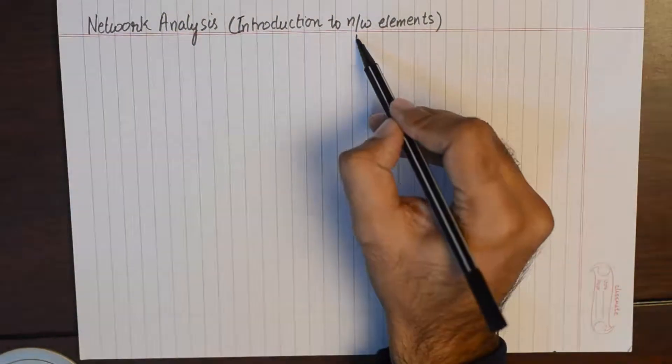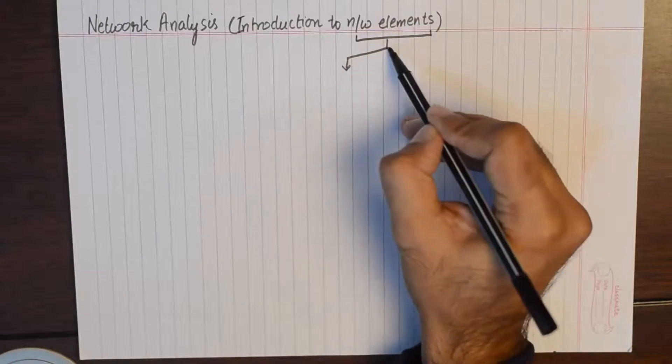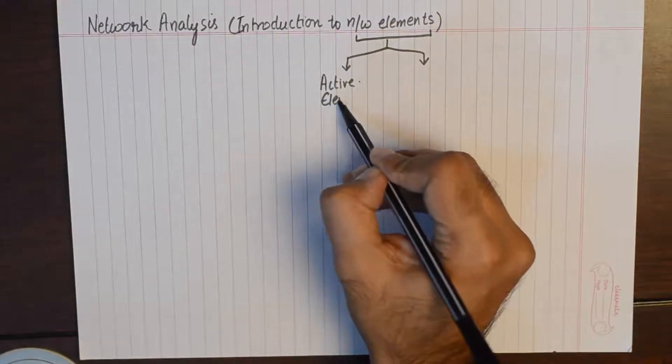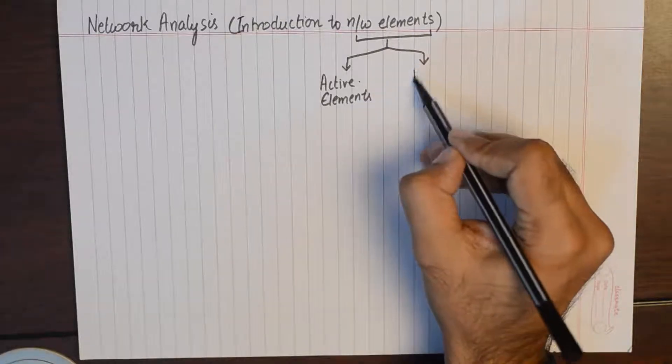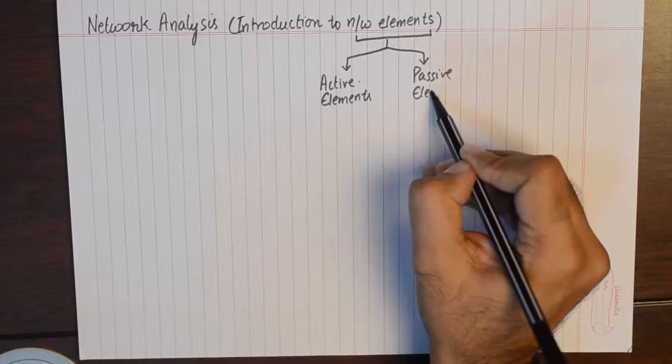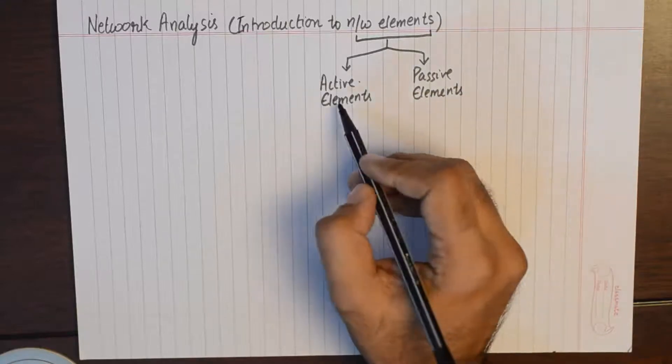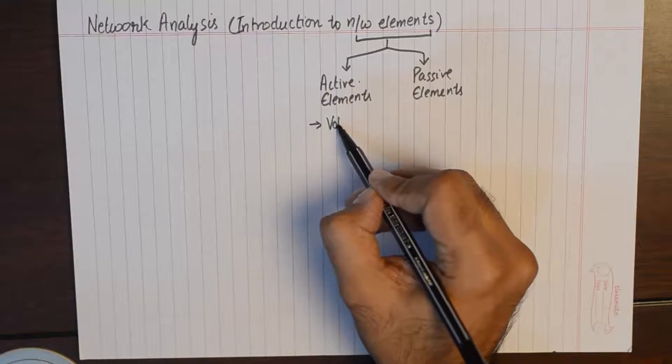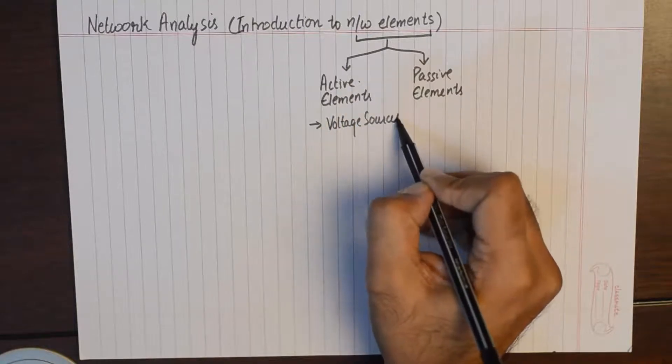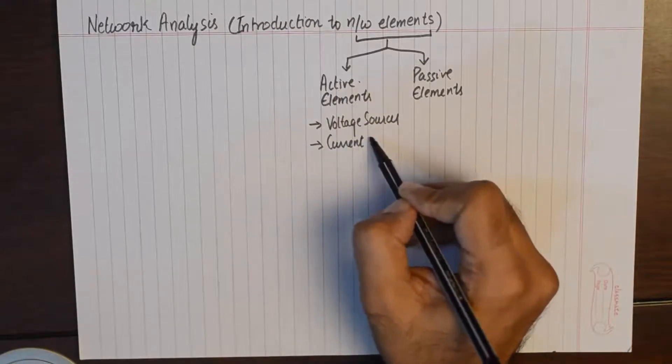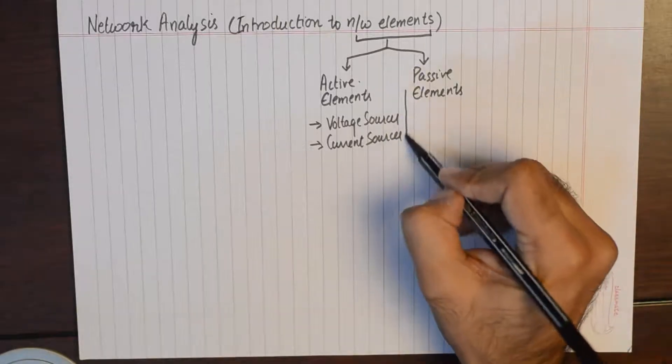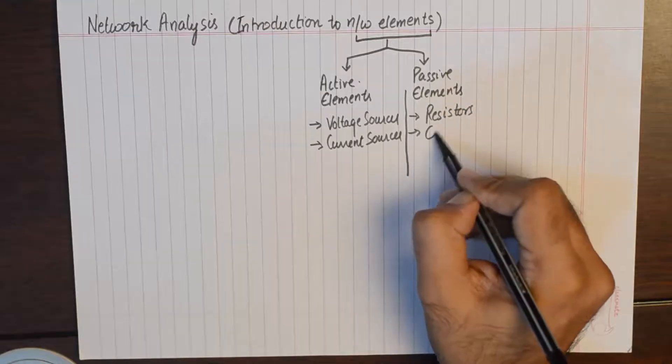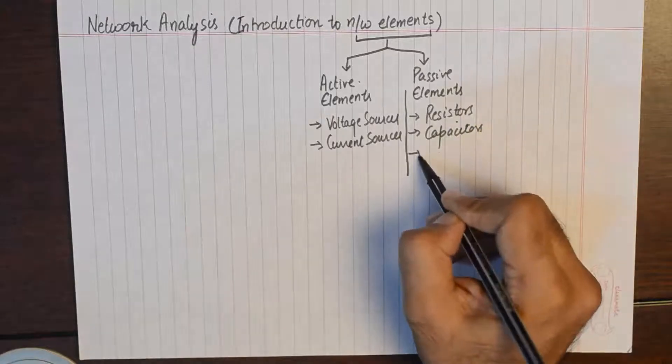If we talk about electrical networks, they consist of various elements interconnected in a rather complicated way so as to perform certain functions. The network elements are classified into two categories: active elements, which are voltage sources and current sources, and passive elements, which are resistors, capacitors, and inductors.